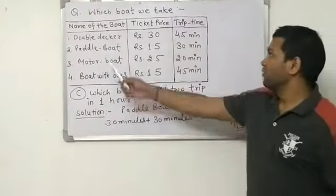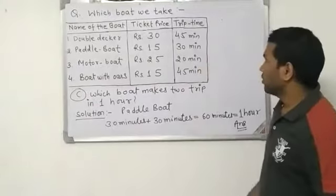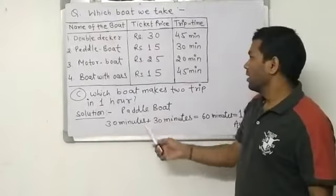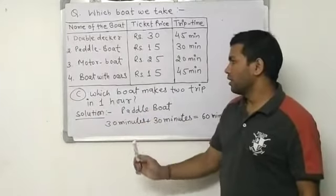Okay friend, which boat we take in question number C. So as we look at the table, the question is which boat makes two trips in one hour.